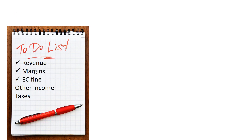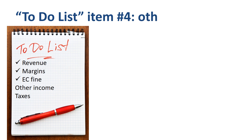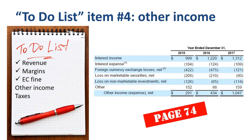Next item on the list: Other Income. This is a contributor to profitability for Alphabet Inc. On page 74, we find that the main element of Other Income is the interest income that Alphabet Inc generates on its portfolio of cash, cash equivalents, and marketable securities. How big that portfolio is will be one of the items for research on the balance sheet analysis.